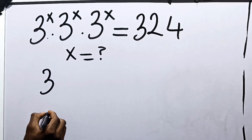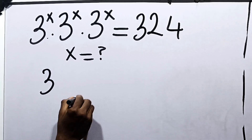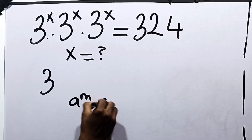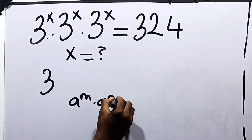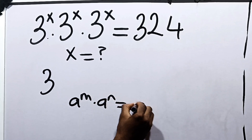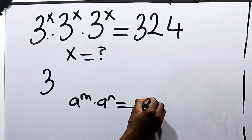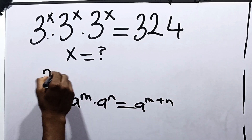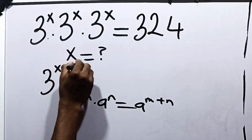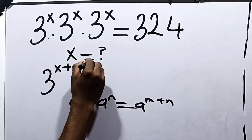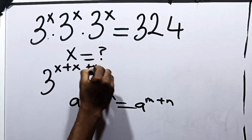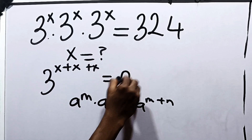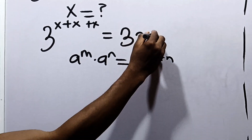From our indices, we already know that a raised to the power m, times a raised to the power n, is equal to a raised to the power m plus n. So this becomes 3 raised to the power x plus x plus x, equal to 324.